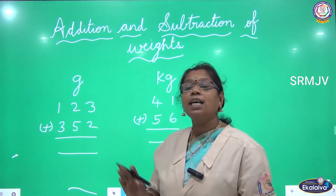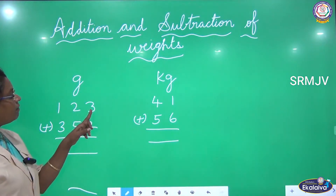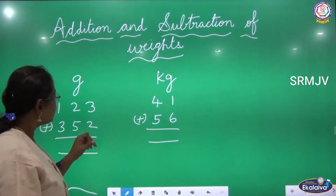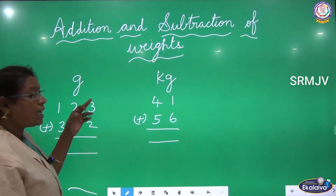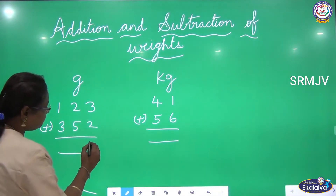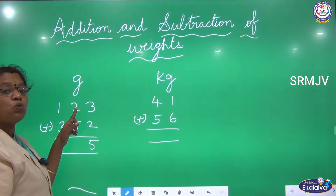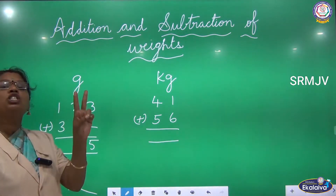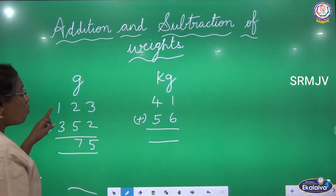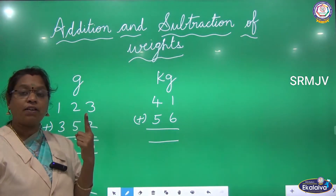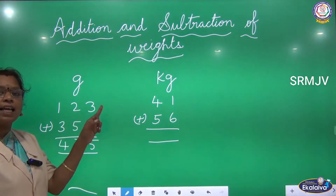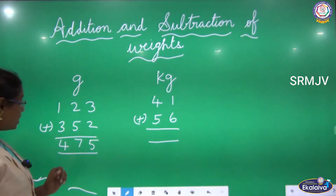Here we are going to do the grams first. We have 123 grams and 352 grams; we are going to add these two numbers, starting from the right side. Three in the mind, two in the finger — three, four, five. Then two and five in the tens place: five in the mind, two in the finger — five, six, seven. Now one plus three: three in the mind, one in the finger — three, four. So we get 475. When you add 123 grams with 352 grams, we get 475 grams.